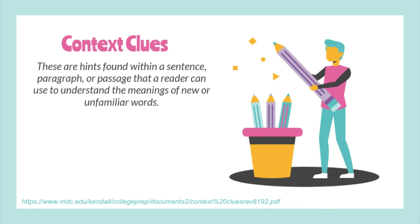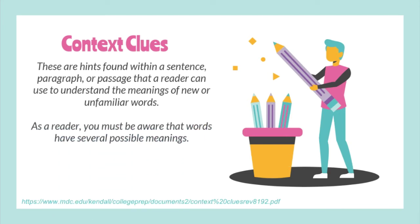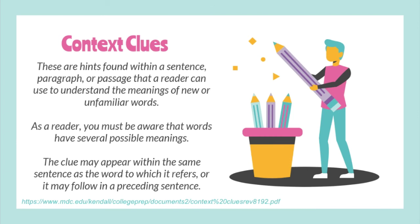Context clues are hints found within a sentence, paragraph, or passage that a reader can use to understand the meanings of new or unfamiliar words. As a reader, you must be aware that words have several possible meanings. The clue may appear within the same sentence as the word to which it refers, or it may follow in a preceding sentence.